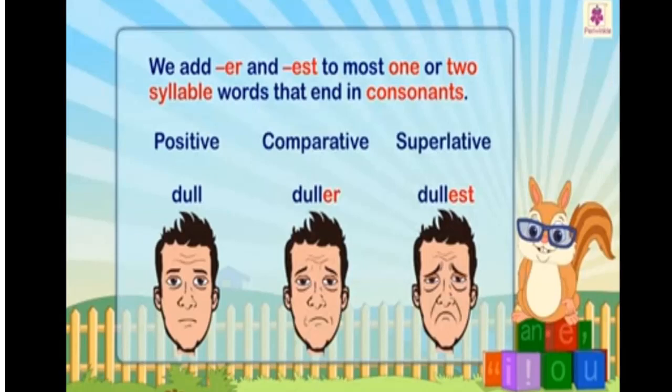We add -er and -est to most one or two syllable words that end in a consonant. For example: dull, duller, dullest.